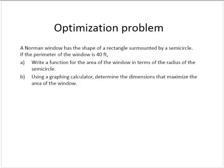Let's draw it first. We have a rectangle surmounted by a semicircle. The perimeter is 40 feet. We're asked to write a function for the area of the window in terms of the radius of the semicircle. So we have this semicircle, and it has a radius r.